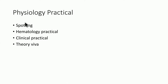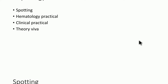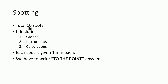In physiology practicals there are four sections: first is spotting, second is hematology practical, third is clinical practical, and fourth is theory. In spotting, there are 10 spots available containing either graphs, instruments, or calculations. Each spot is given one minute, so in total 10 minutes are given, plus one extra minute for completing previous spots. You have to write to-the-point, objective answers.